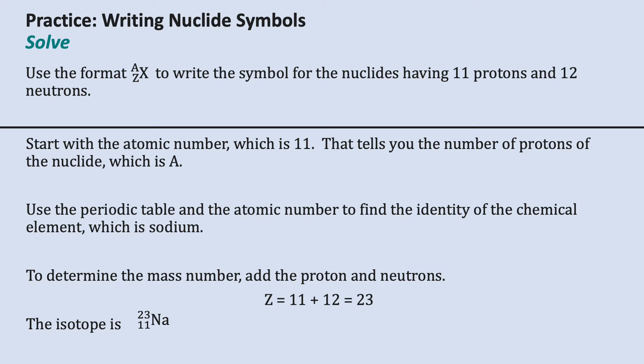To determine the mass number, we add the protons and neutrons together. The isotope is sodium, Na, with a superscript on the left side of 23, which is the mass number, and 11 as the subscript on the left.